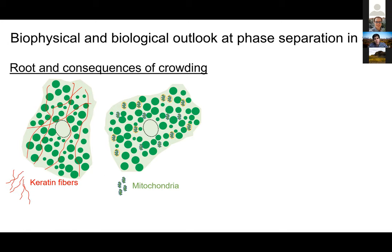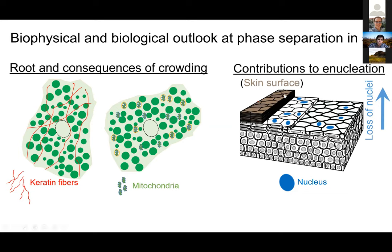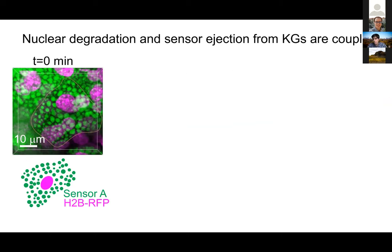The skin is unique in that when it goes from the stem cell state to full differentiation at the surface, the cells actually lose their nucleus. They have to lose their nucleus when going from the granular layer to the corneum. We thought there was a good chance that these crowding and liquid-like granules in the skin were playing a role in this enucleation step. A question from the audience: can you explain the implication or use of liquid-liquid phase separation inside tissue?